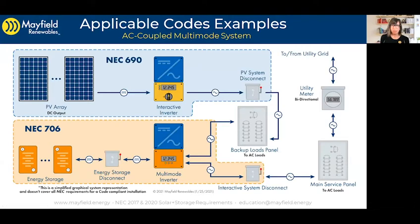Now we get to apply all those wonderful 706 code sections to our system schematic, just like we did with Article 690. We're looking at our AC coupled multimode system, and we have to start thinking — now that we have it in front of us and have all those code requirements in our minds — where we could apply them.